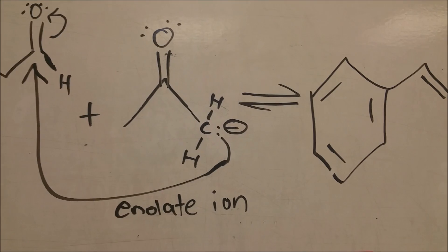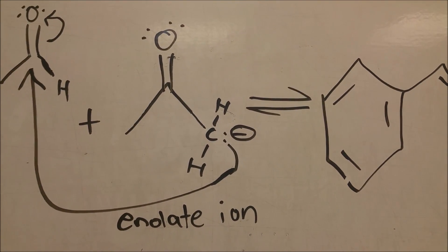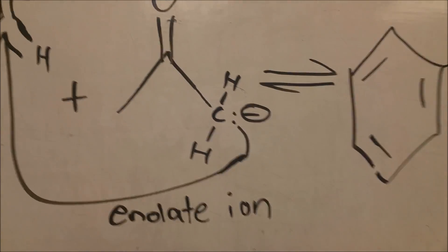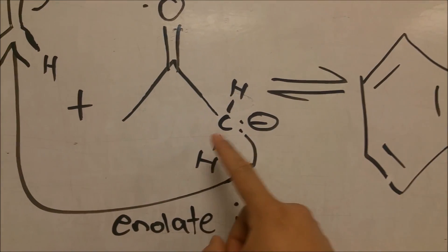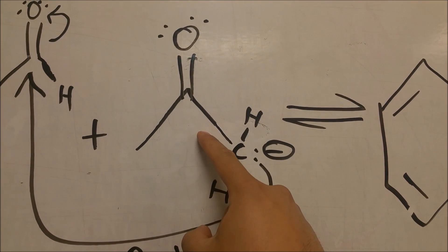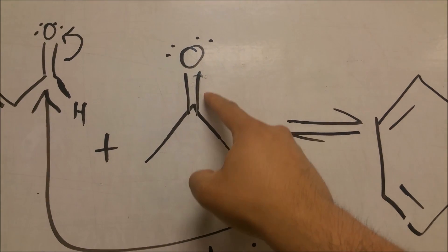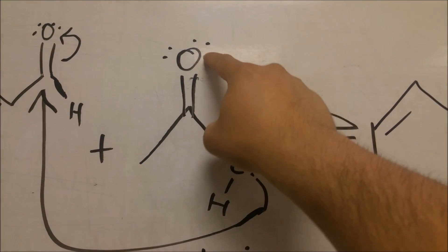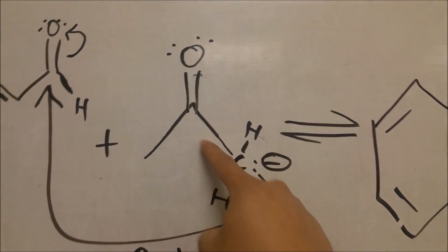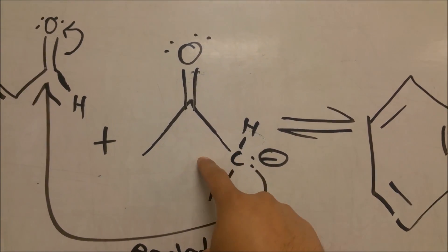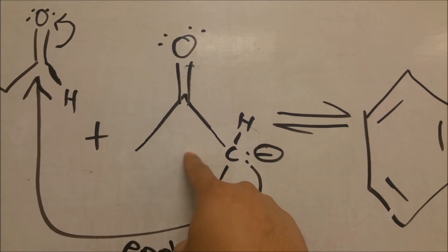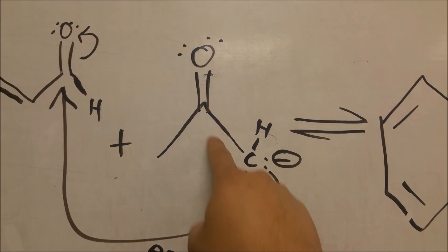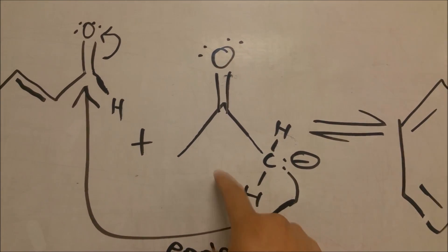This forms what's called the enolate ion where a lone pair is on the carbon. Now I didn't draw it, but as you can see, these lone pairs can go here while pushing these 2 electrons in this bond to the oxygen, giving oxygen a negative charge and a double bond here. But I drew it this way because this is the way the reaction happens with this form, not the double bond form. So that's very important.